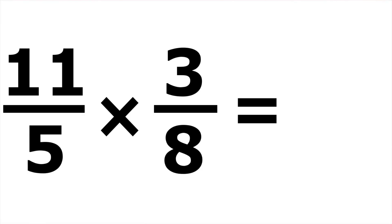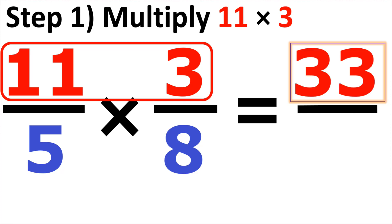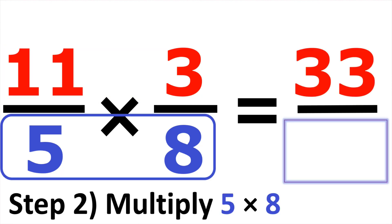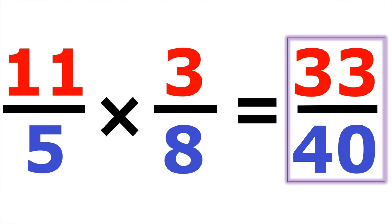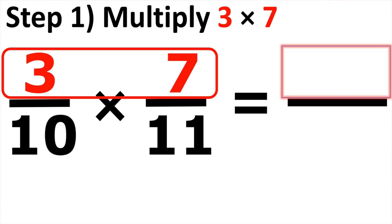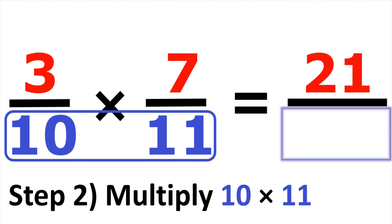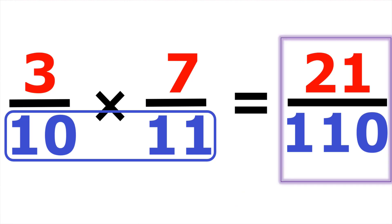Example number twenty-four: eleven over five times three over eight. Up top, eleven times three gives us thirty-three. At the bottom, five times eight gives us forty. The answer is thirty-three over forty. And number twenty-five, we have three over ten times seven over eleven. Up top, three times seven gives us twenty-one. At the bottom, ten times eleven is one hundred ten. Our answer is twenty-one over one hundred ten.